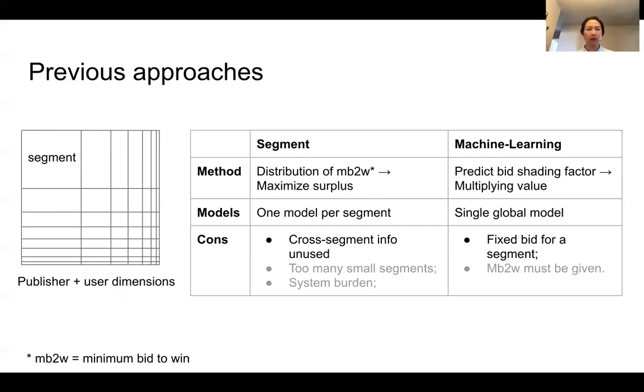The good thing about this model is that it utilizes the information from all segments. However, for a very large segment, it outputs a single prediction, so it has a single optimal bid price, which could be a problem if the segment is large and the winning prices follow a wide distribution.